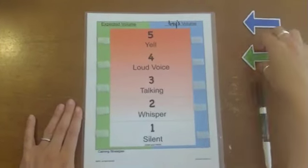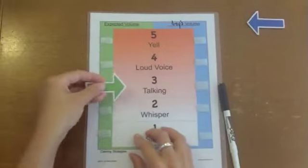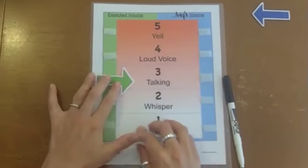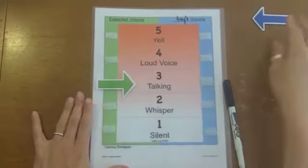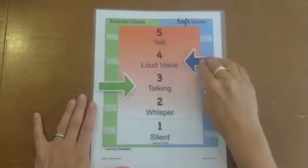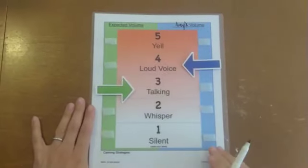After writing the student's name in the header on the blue side, sliding arrows are adjusted to display both the expected volume and the student's volume. In this example, Velcro is used to affix the arrows. Paper clips or wipe-off markers could easily provide the same type of feedback to students.